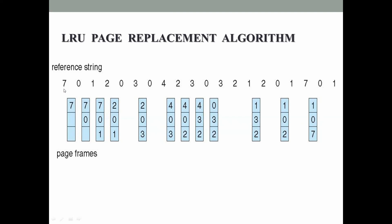The first page reference is page number 7. Since all frames are initially empty, this generates a page fault and 7 is loaded into memory. Next, page reference 0 is not in memory, generating a page fault, and 0 is loaded. Next, page reference 1 is not in memory, generating a page fault, and 1 is loaded from disk into memory. After loading 1, we have three page faults and memory contains pages 7, 0, and 1.